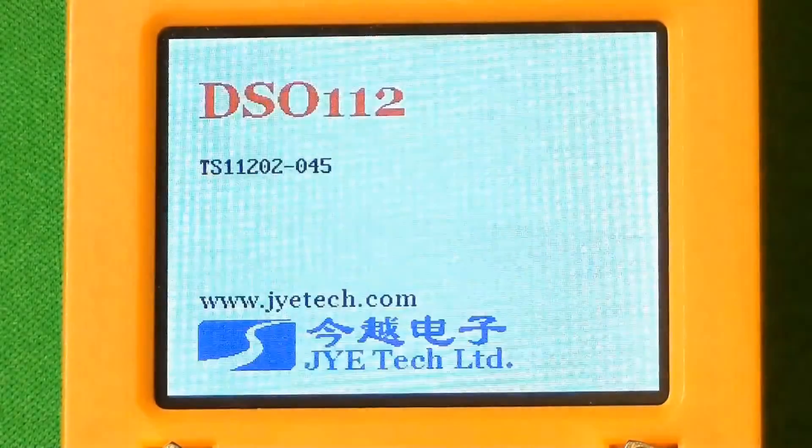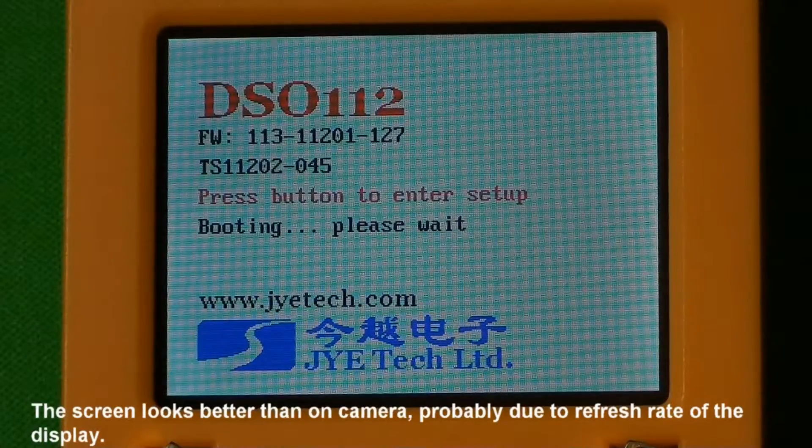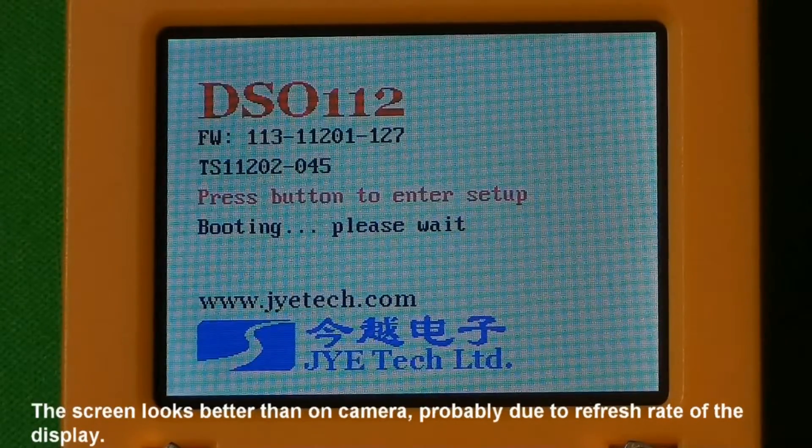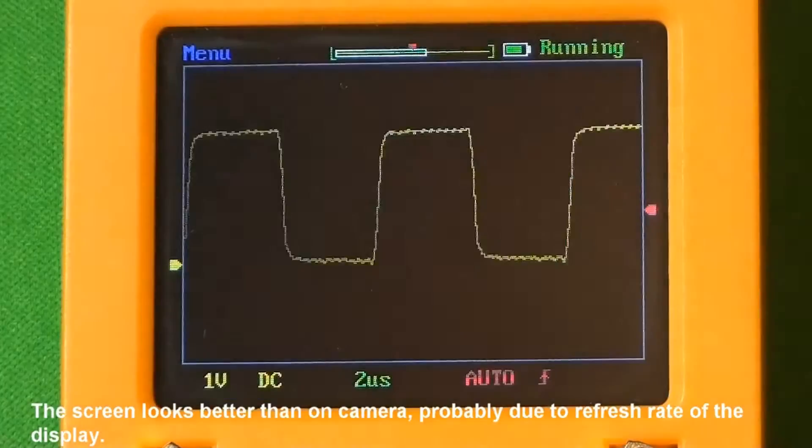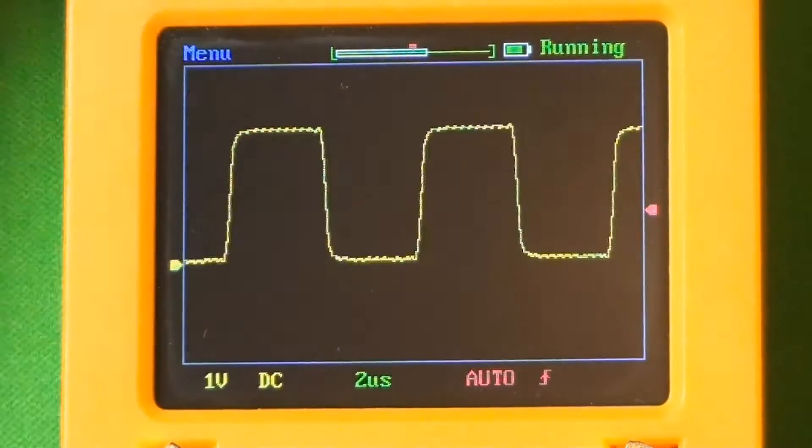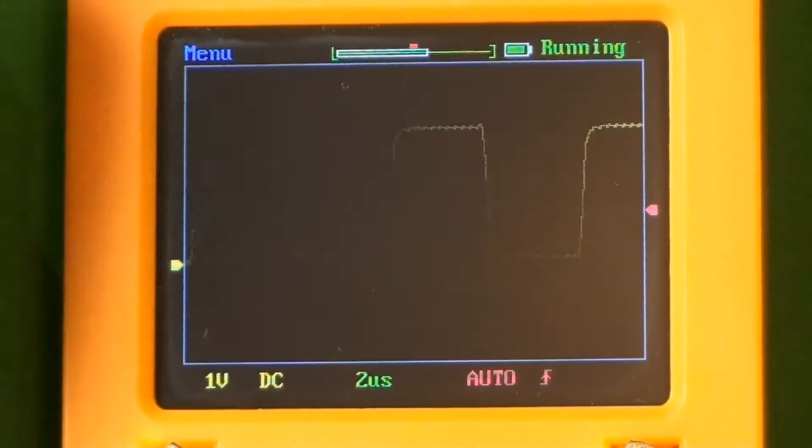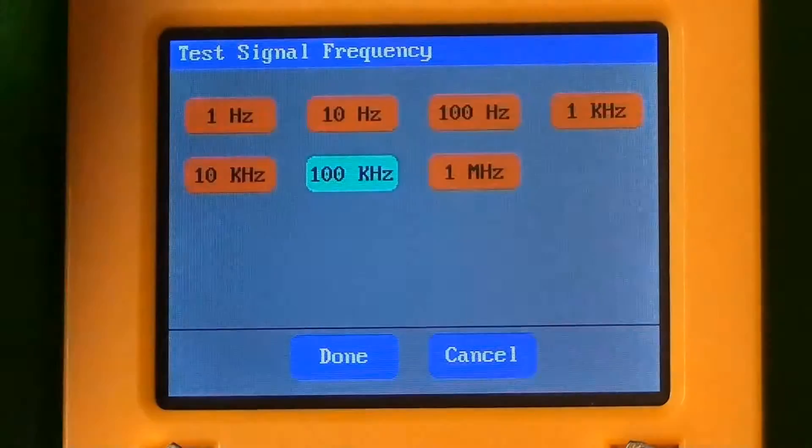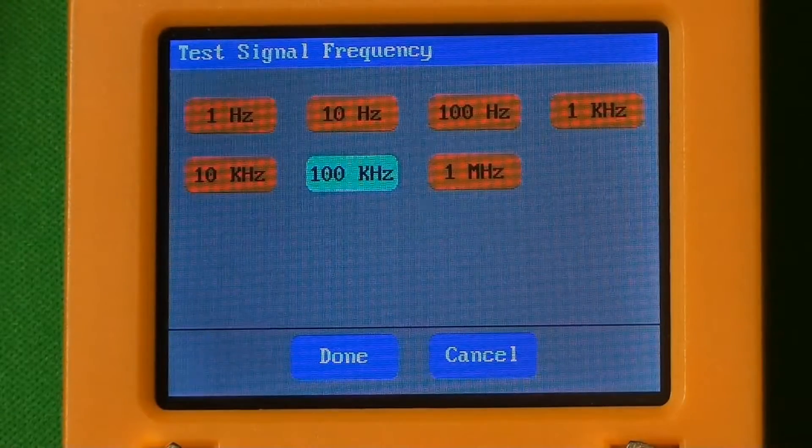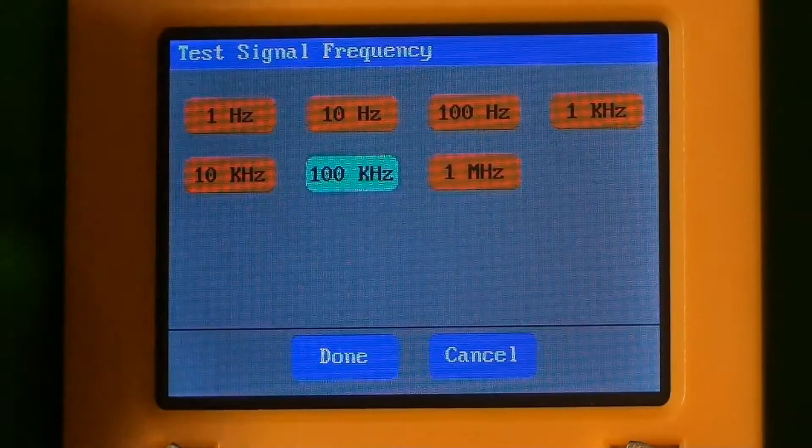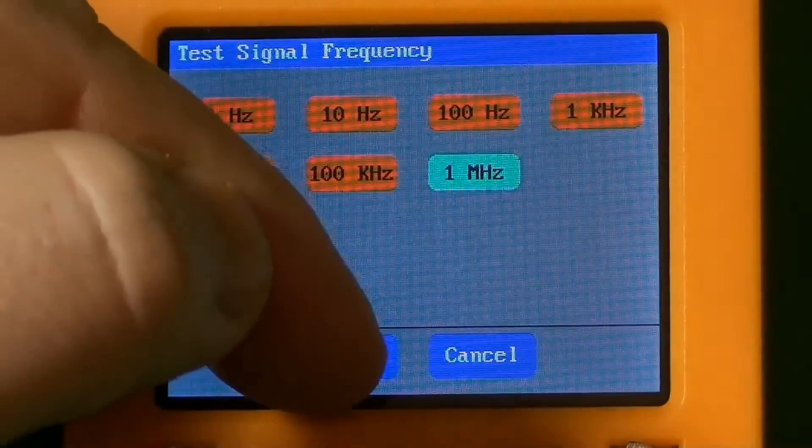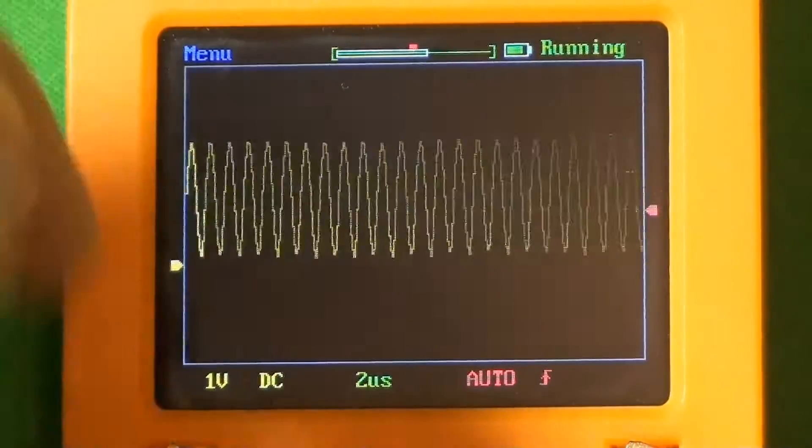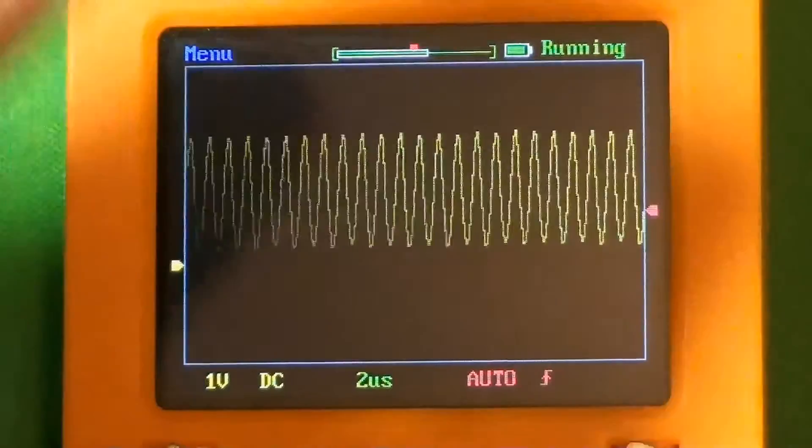You can set the generator here in the menu. The test signal is at 100 kilohertz. Let's set it to 1 megahertz. Yeah, it's not really a square wave, but you get the idea.